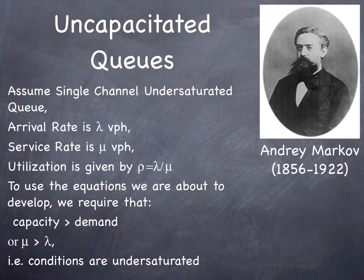Let's start with a simple model. We have a single channel, under-saturated queue. The arrival rate is lambda vehicles per hour. The service rate is mu vehicles per hour. Utilization, what percentage of the capacity is being used, is lambda over mu, which we denote with a rho.